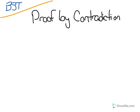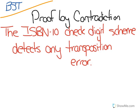And we're going to prove that the ISBN check digit scheme detects all transposition errors, and we're going to do this using proof by contradiction.